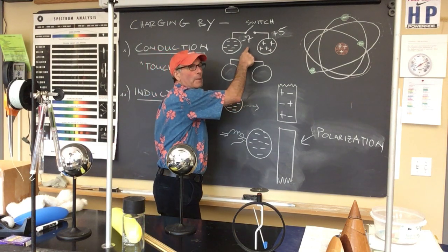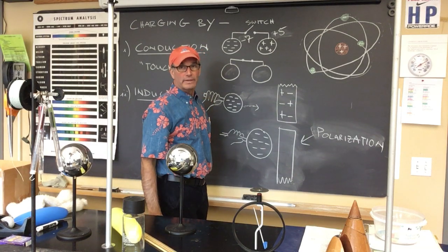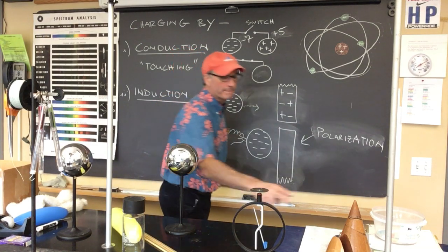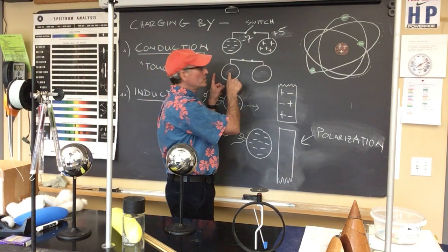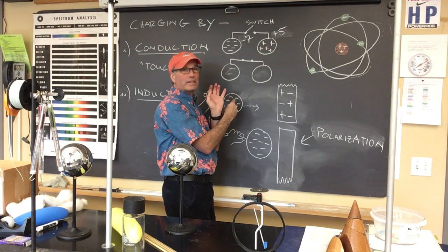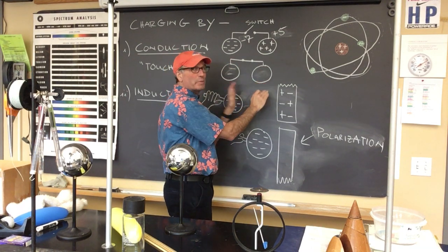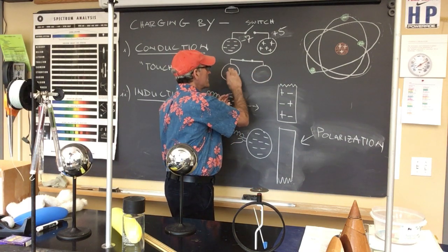Negative seven plus a plus five is equal to what? Negative two. Negative two electrons aren't just hanging on one side. They're actually going to distribute because here's a technically neutral sphere. So that wouldn't happen.